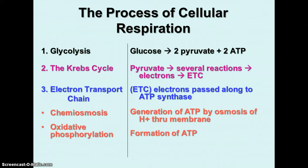The process of cellular respiration is divided into three phases. The first is called glycolysis. The second is called the Krebs cycle, also called the citric acid cycle. And the third is the electron transport chain.